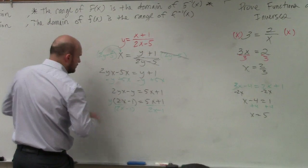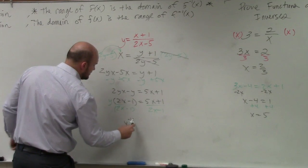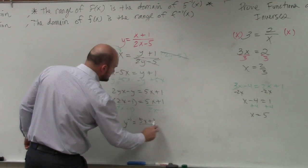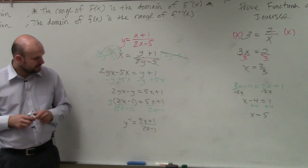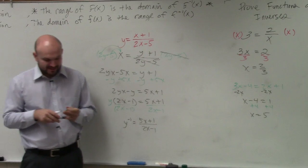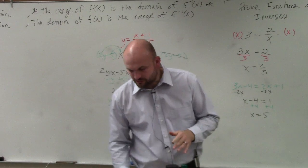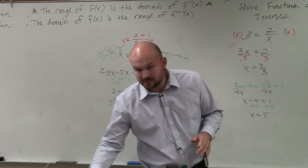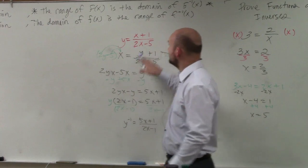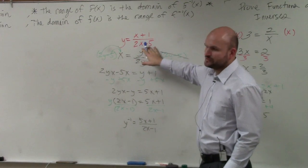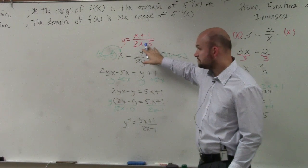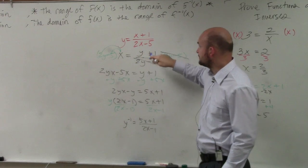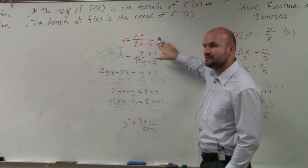So therefore, y inverse is equal to (5x plus 1) divided by (2x minus 1). Now, one thing I forgot to mention with you guys is we forgot to go over the domain and range. So let's do domain and range real quick. Domain and range over here. So there's no radicals, right? So we don't need to worry about the radicals. And we'll go over on the graph here in a second.